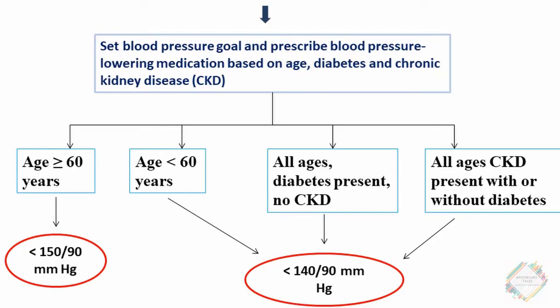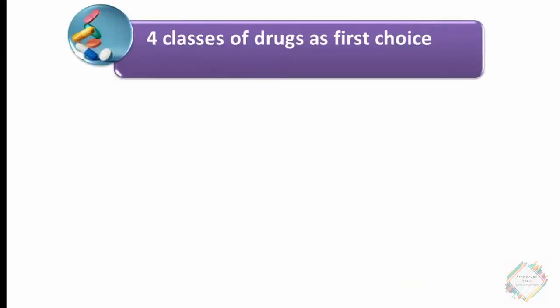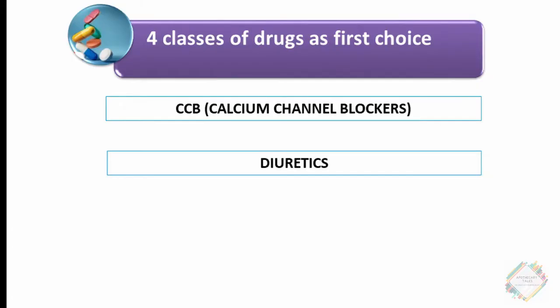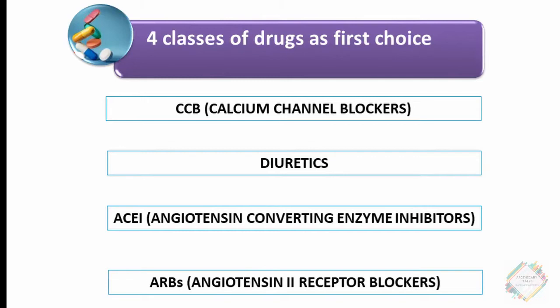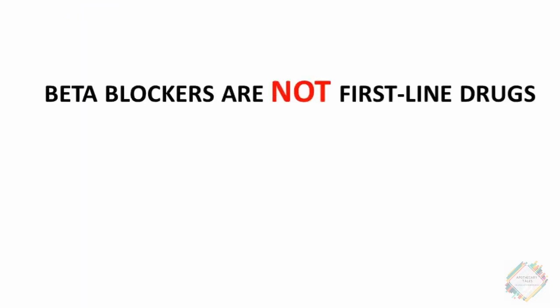After this, we initiate first-line therapy. The four classes of drugs used as first choice in hypertension include calcium channel blockers, diuretics, ACE inhibitors, and angiotensin-2 receptor blockers. Remember, beta blockers should never be used as a first-line agent, due to reduced cardioprotection, suboptimal blood pressure lowering, pseudo-antihypertensive efficacy, undesirable adverse effects reducing patient compliance, and unfavorable metabolic effects.